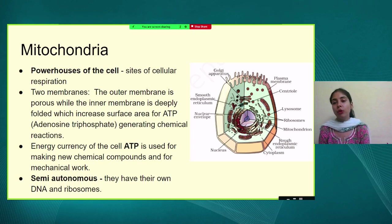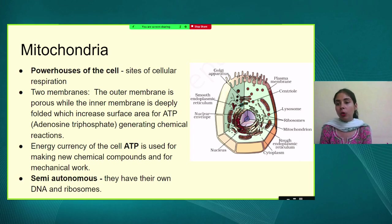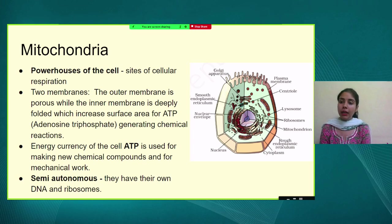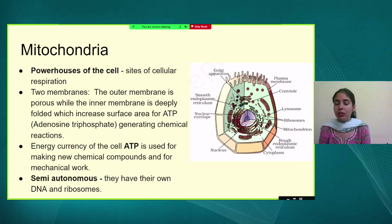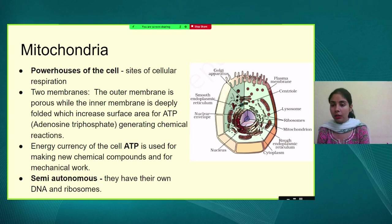ATP — adenosine triphosphate — is called energy currency because it provides energy for all functions happening in the cell, which is why mitochondria is known as the powerhouse of the cell. One very striking feature of mitochondria is that it has its own DNA and its own ribosomes. Ribosomes are important because they produce proteins.